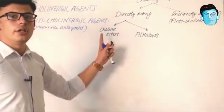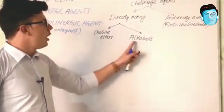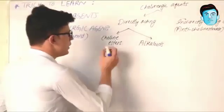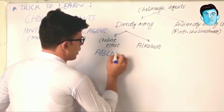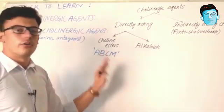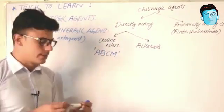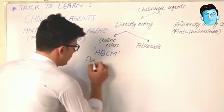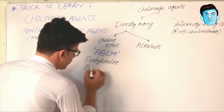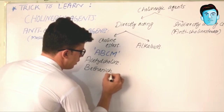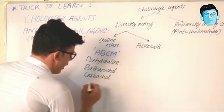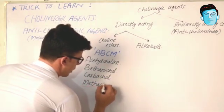In the category of choline esters we have some drugs, and alkaloids also contain some drugs. For the choline esters we have a trick: A-B-C-M, where every single alphabet corresponds to one drug. A stands for Acetylcholine, B stands for Bethanechol, C stands for Carbachol, and M stands for Methacholine.